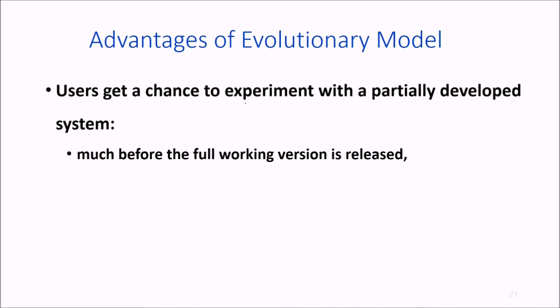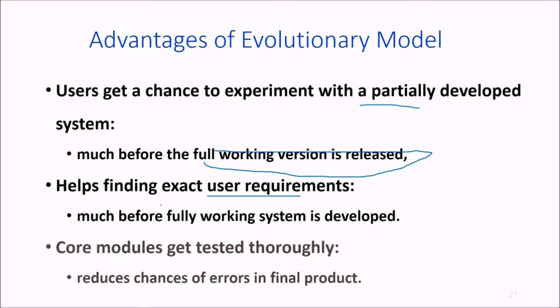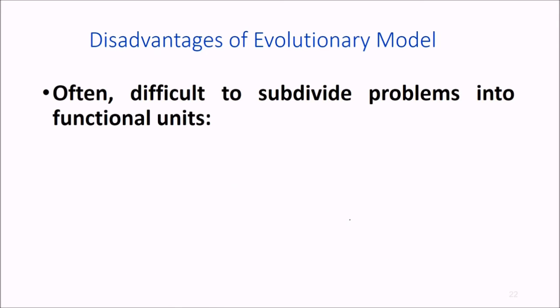What are the advantages of the evolutionary model? First, users can experiment with a partially developed system much before the working version is released. This helps find exact user requirements well before the working system is developed. Core modules are repeatedly tested, which reduces the chances of errors in the final product.